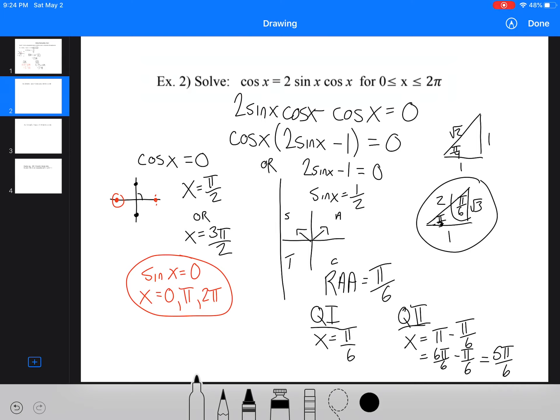So my solutions are pi over 2, 3 pi over 2, pi over 6, and 5 pi over 6. There's actually four solutions to that one question. And if you factored out those cos's right at the start, you'd be missing all of these solutions.